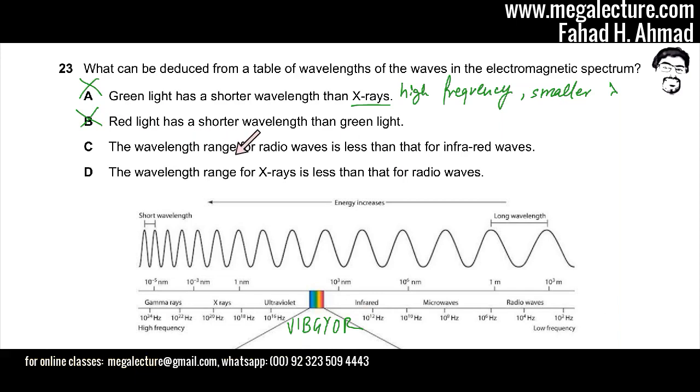The next one is wavelength range for radio waves is less than that for infrared waves. You can have a look at the wavelengths. Infrared are around 10 to the power 12 to 10 to the power 10. And radio waves have a much bigger spectrum. They cover a much larger spectrum. So the wavelength range for radio waves is less than that is incorrect. This statement 'less' is incorrect. Radio waves cover a much larger part of the spectrum. So option C is also going to be incorrect.